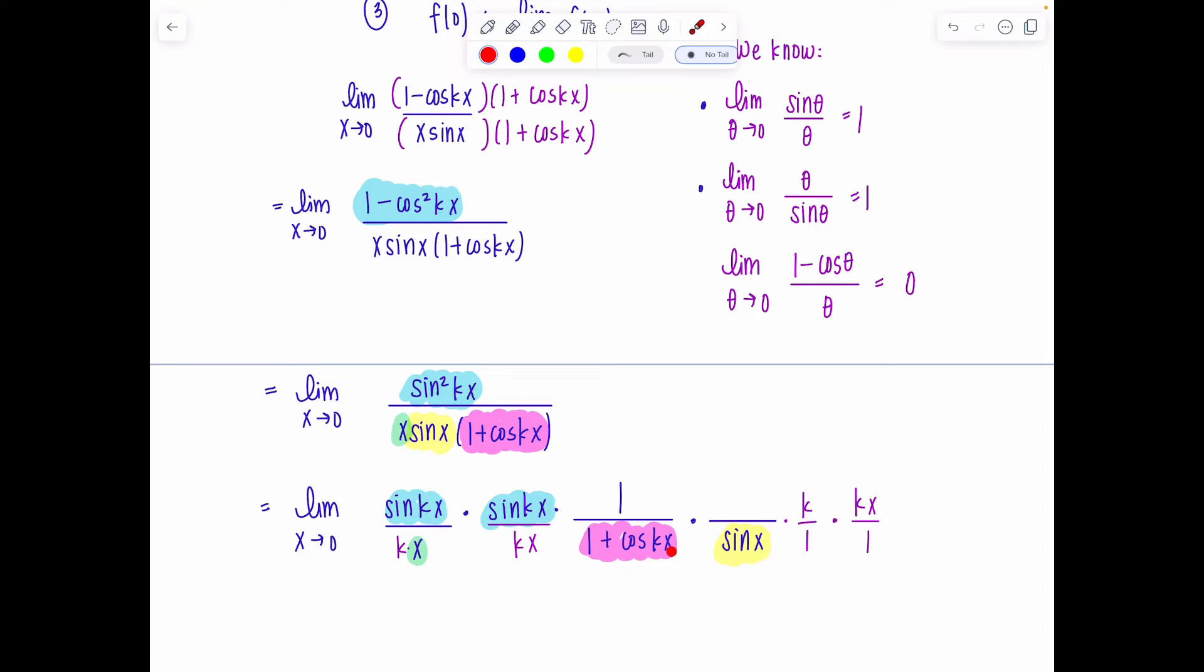Cosine of zero is one. So this whole term right here is going to 1/(1 + 1). That's going to 1/2. So this is just going to half. I don't need to manipulate or play with anything there.